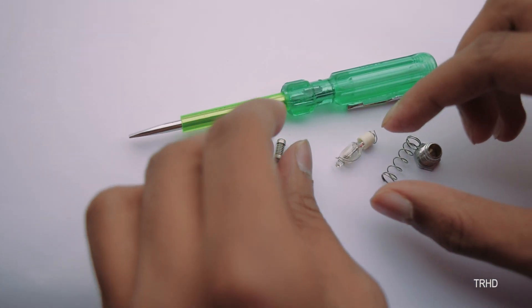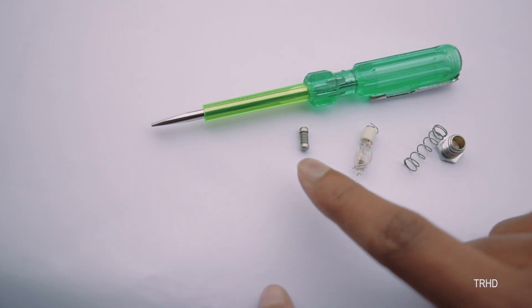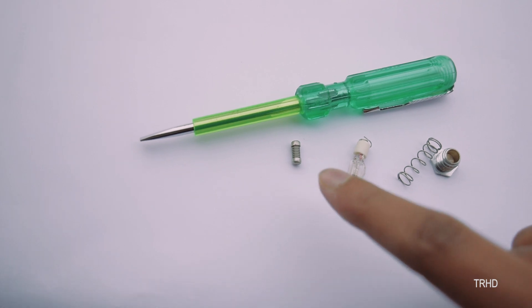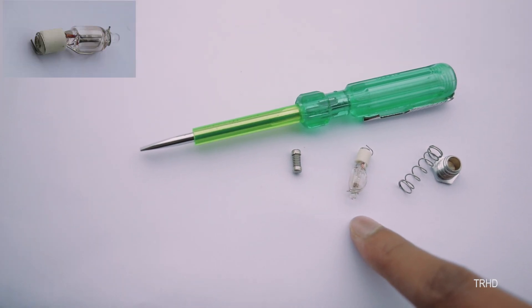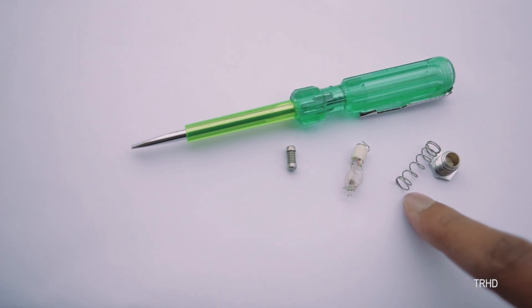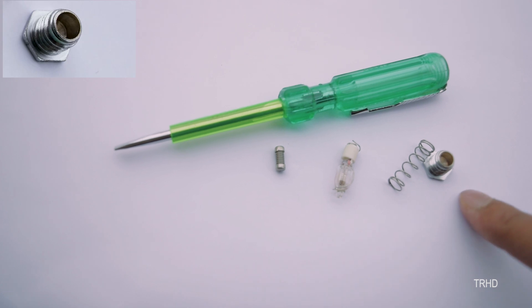So there were these items in this neon lamp tester: a resistor, a neon lamp, a connector spring, and an external contact.